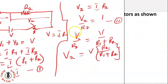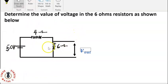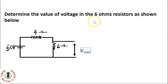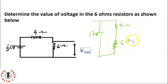Now let's take an example: determine the voltage across the 6-ohm resistor in the circuit shown. For convenience, let's redraw the circuit. We have a 50-volt supply, a 4-ohm resistor, and a 6-ohm resistor connected in series. I'm looking for the output voltage V-out across the 6-ohm resistor.